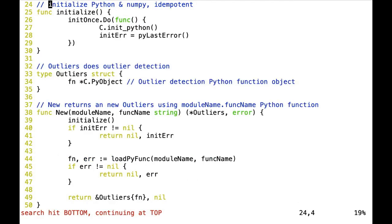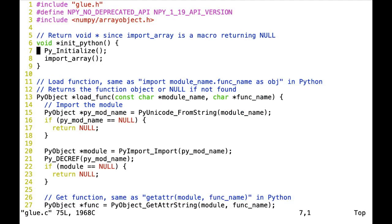So what does initialize do? Initialize uses a sync.once to make sure that we initialize only once. It calls the C function for initializing Python and checks if there's an error. And in glue.c, initPython calls Py_Initialize, which initializes Python, and then import_array, which initializes NumPy.